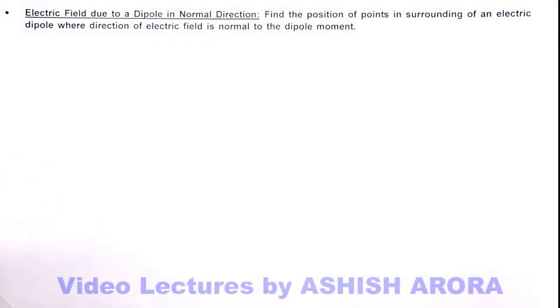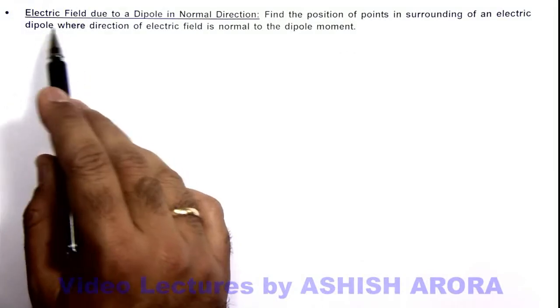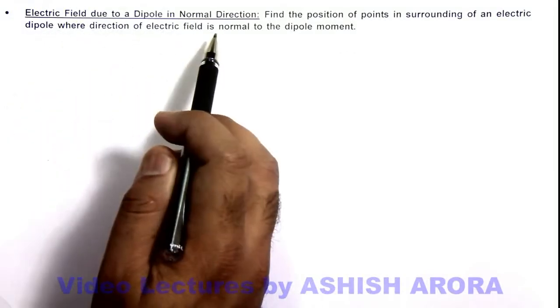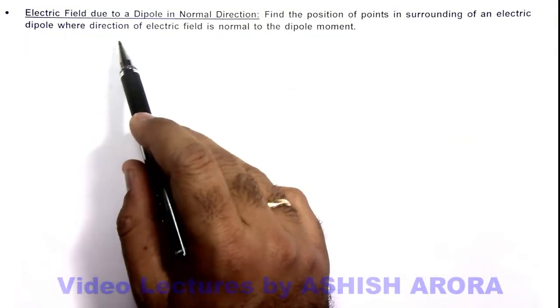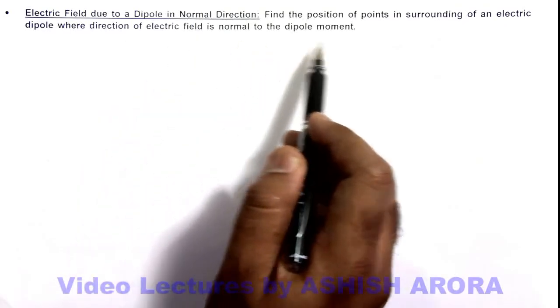Let's analyze another illustration of electric field due to a dipole in normal direction. Here we are required to find the position of points in surrounding of an electric dipole where direction of electric field is normal to the dipole moment.